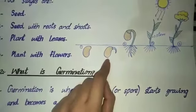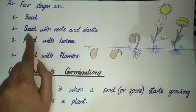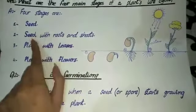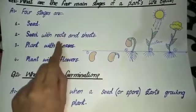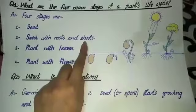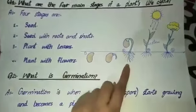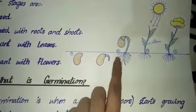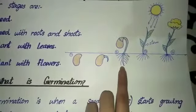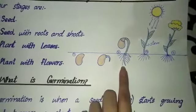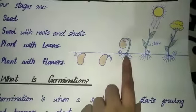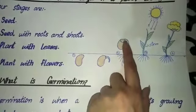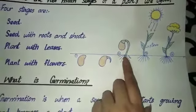The second stage is seed with roots and shoots۔ جب seed کی roots بن جاتی ہیں اور اس کی shoot بن جاتی ہے — جیسا کہ آپ دیکھ سکتے ہیں یہاں roots ساری moist soil میں spread ہو چکی ہیں اور وہ seed earth کے surface کو break کر کے باہر آ چکا ہے — یہ اس کا second stage ہے۔